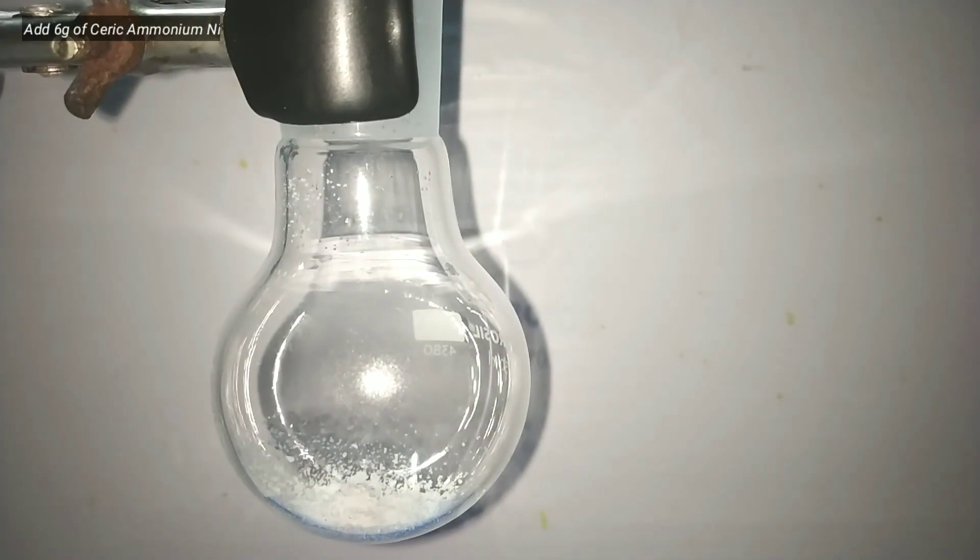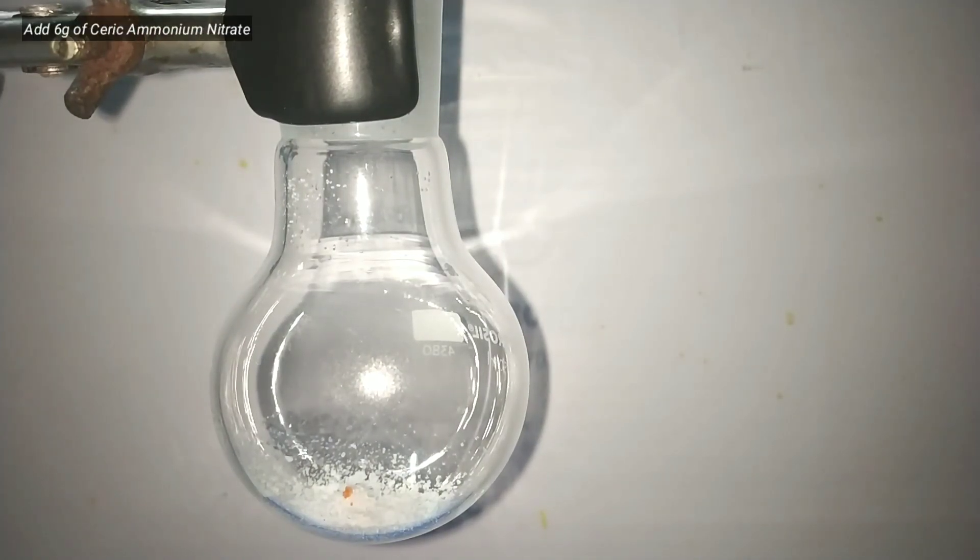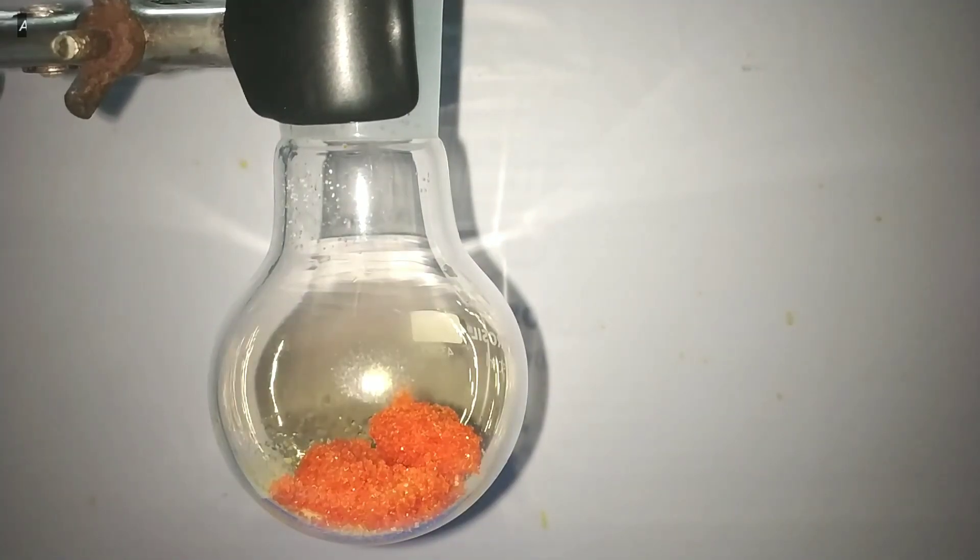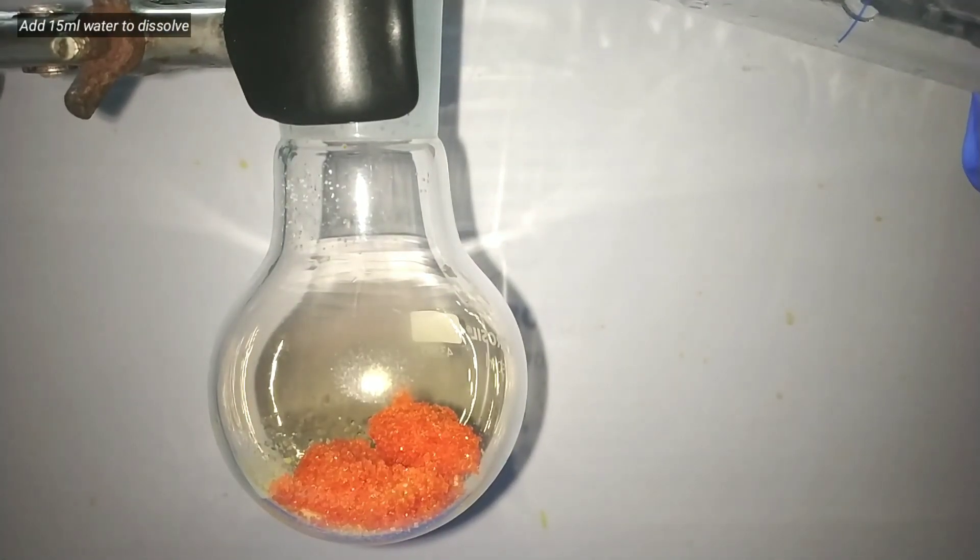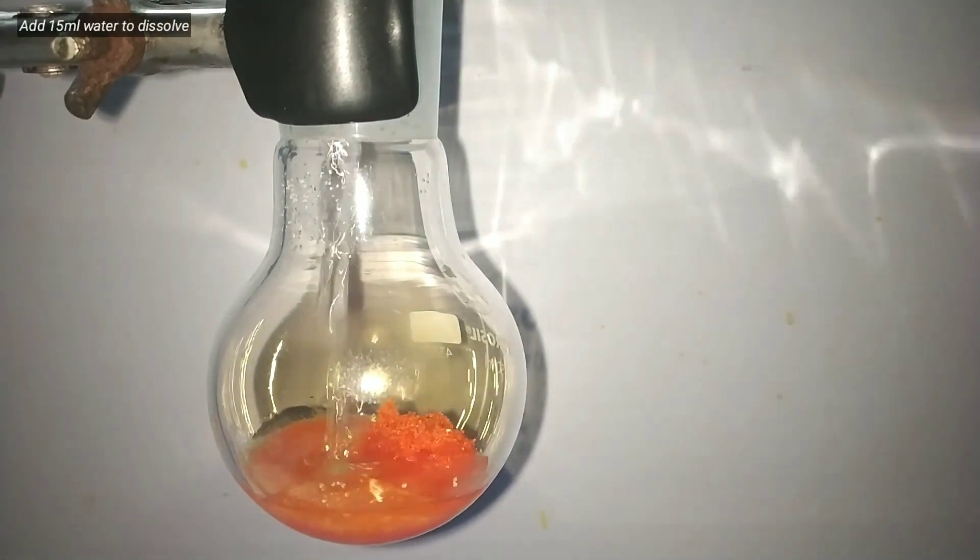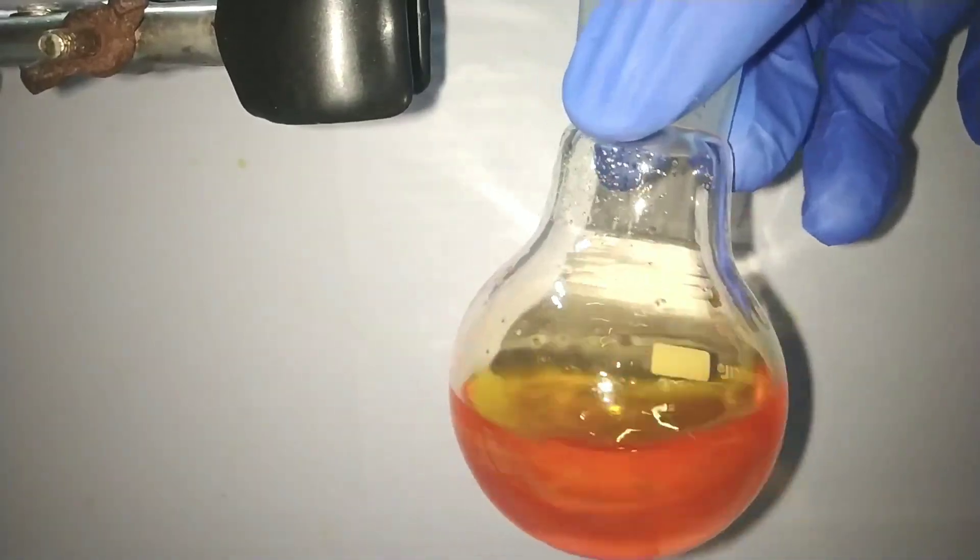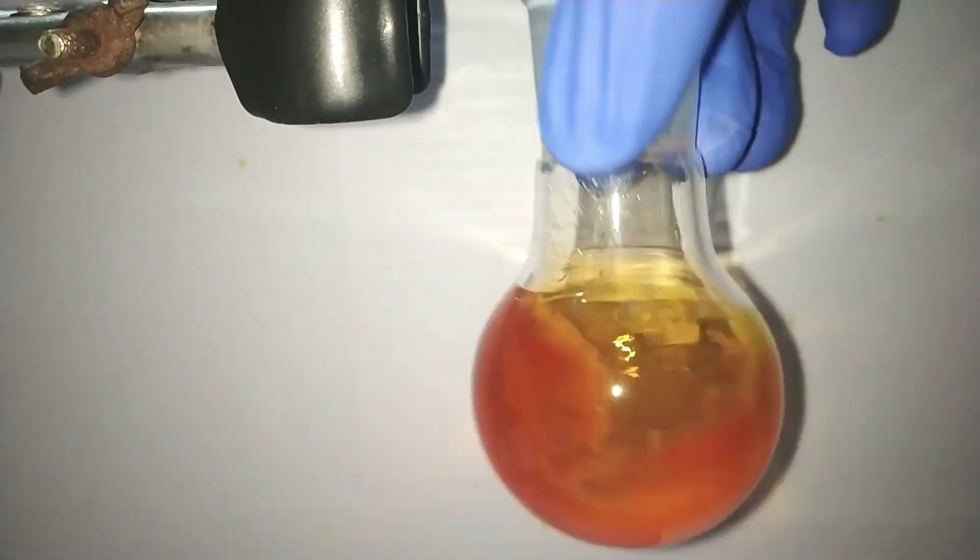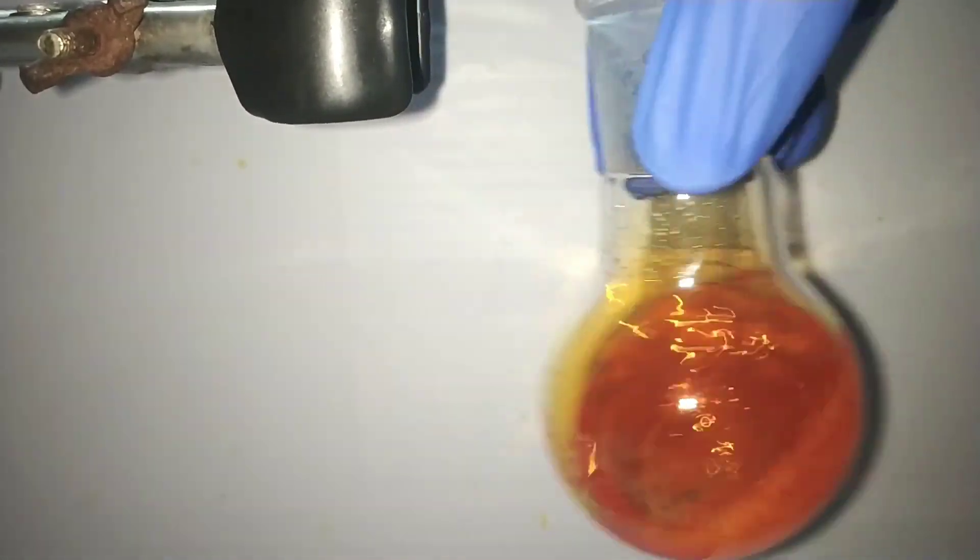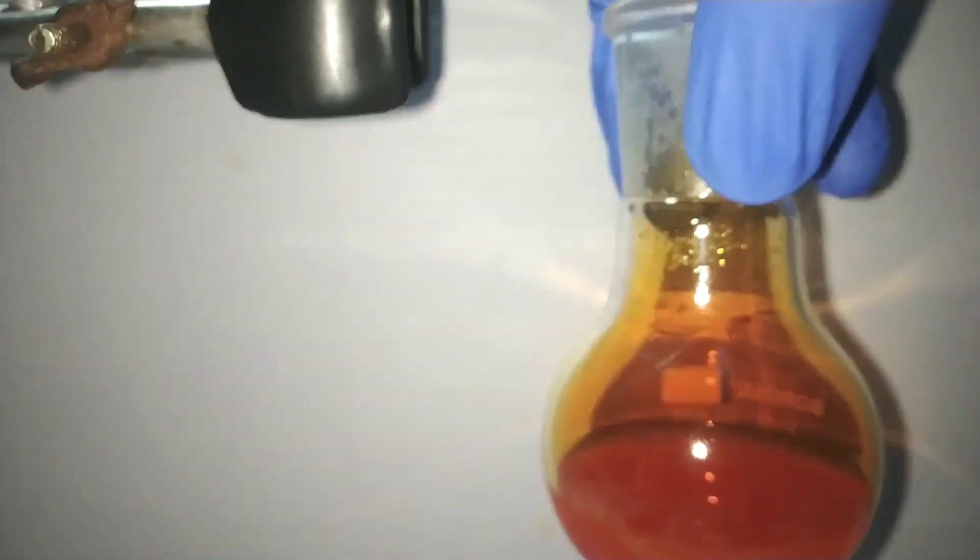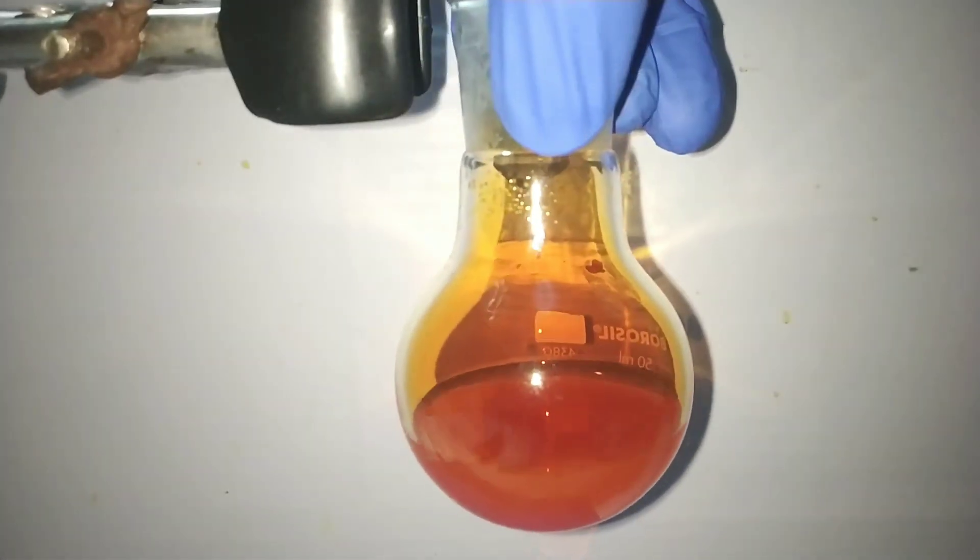Next we add 6 grams of ceric ammonium nitrate into it. It has a bright orange color and looks exactly like potassium dichromate crystals. Ceric ammonium nitrate is a pretty strong oxidizing agent which oxidizes the bromide and generates the bromonium ion or bromine in situ which then reacts with the acetanilide to form the final product. Ceric ammonium nitrate and potassium bromide is our novel brominating agent.